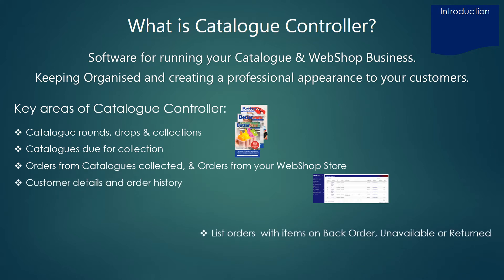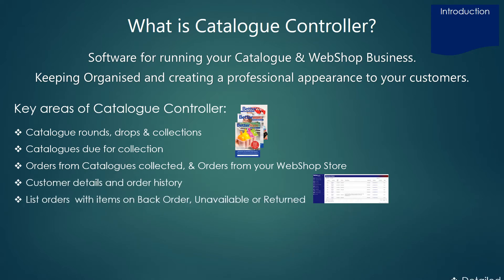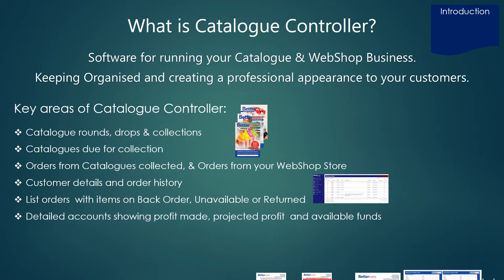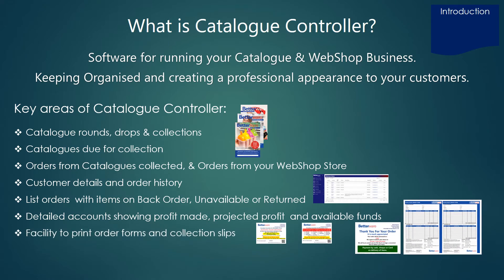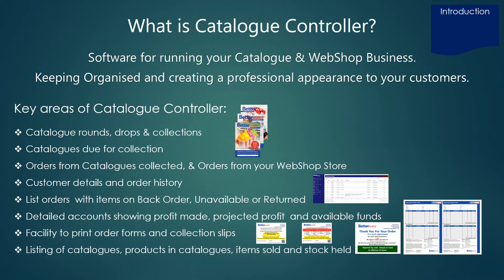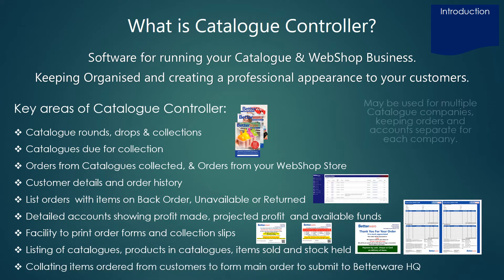The system provides a record of items on back order, unavailable items or returned items. It includes detailed accounts showing profit made and available funds, facility to print order forms and collection slips, listing of catalogues, products in catalogues, items sold and stock held, collating items ordered from customers to form a main order to HQ. It may be used for one or more catalogue companies, keeping orders and accounts separate for each company.